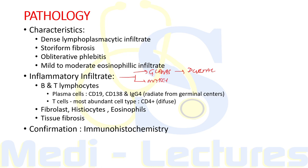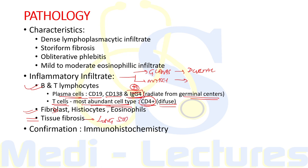The inflammatory infiltrate is typically composed of a mixture of B and T lymphocytes. B lymphocytes are present as plasma cells which stain for CD19, CD138, and most importantly IgG4, radiating from germinal centers. T cells, which are the most abundant cell type, are CD4-positive cytotoxic T cells present diffusely throughout the tissue. Fibroblasts, histiocytes, and eosinophils can also be observed in moderate numbers. Tissue fibrosis is usually evident if the condition is long-standing.